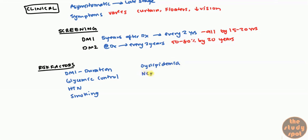Dyslipidemia is a known risk factor. Diabetic nephropathy is also important — retinopathy precedes nephropathy, so if a patient has nephropathy, you definitely want to look at the eye because retinopathy probably occurred first. Pregnancy is also a risk factor because during pregnancy there is less glucose tolerance and patients tend to become more hyperglycemic.